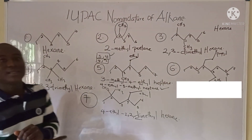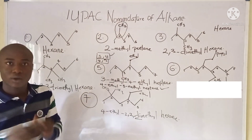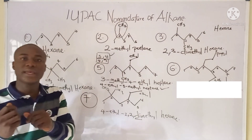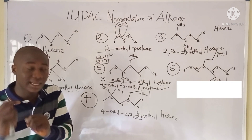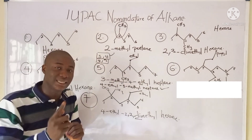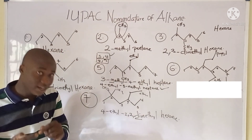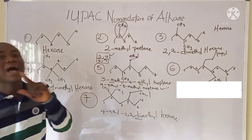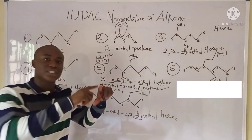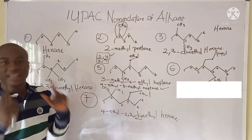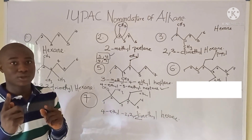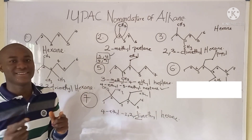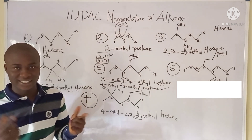This is the IUPAC nomenclature applied to alkanes. Remember that alkanes are single-bonded and are sp³ hybridized. The first member of the alkanes series is methane, also called marsh gas or firedamp. Don't forget to subscribe to Chemistry Made Easy with Brent Edu for more videos. Thanks for watching.